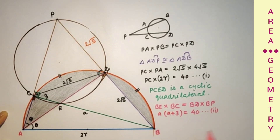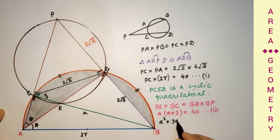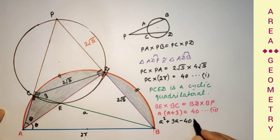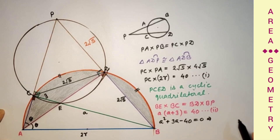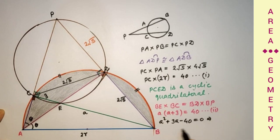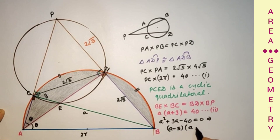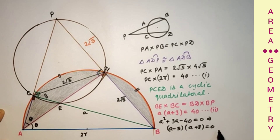Simplifying: a² + 3a − 40 = 0, which factors as (a − 5)(a + 8) = 0. This gives a = 5 or a = −8. We ignore the negative value, so a equals 5.